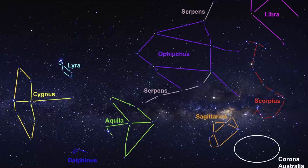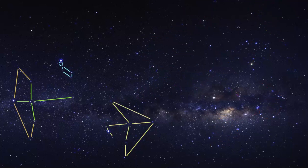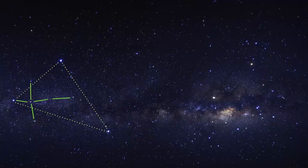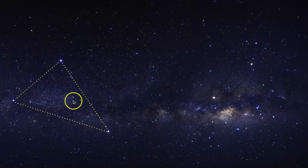There are a bunch of other constellations here — we've got Scorpius, which is very obvious to see in this photo, Sagittarius, which is known by its own asterism called the Teapot, Ophiuchus, and Libra. For me, it's all about finding the Summer Triangle, and from there I can figure out where the Northern Cross is going to be.